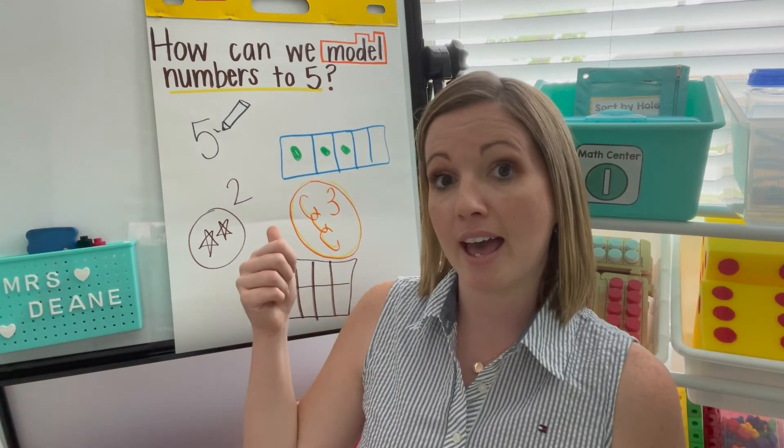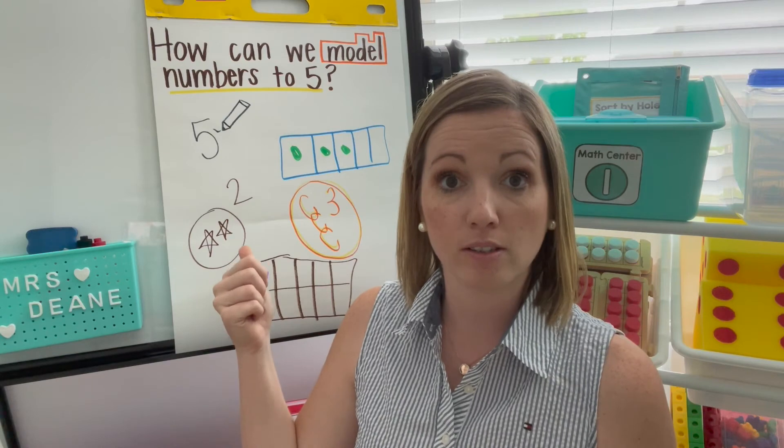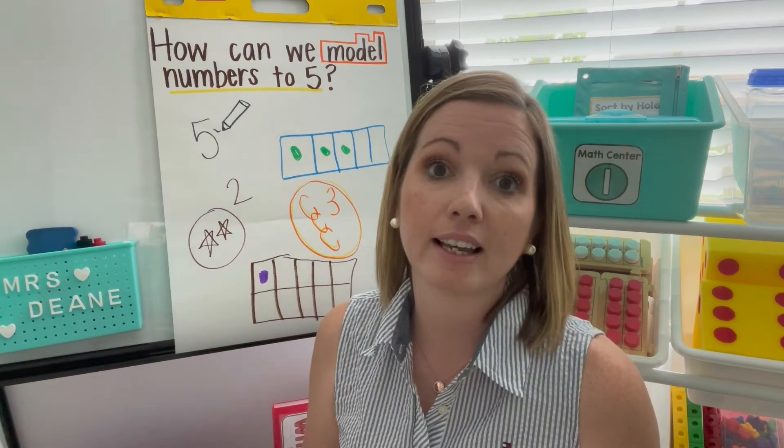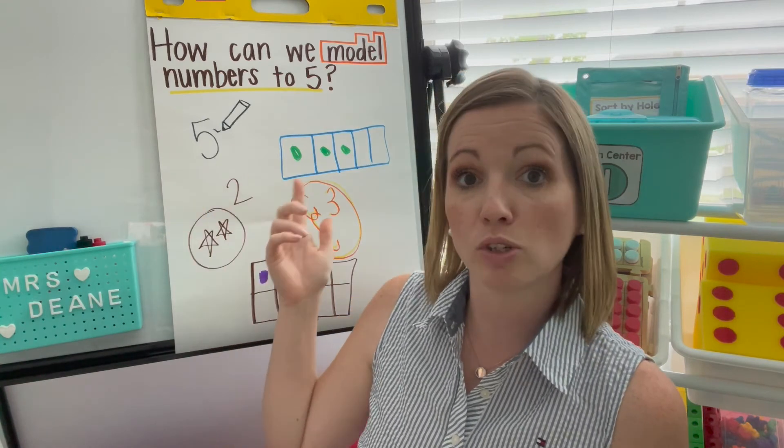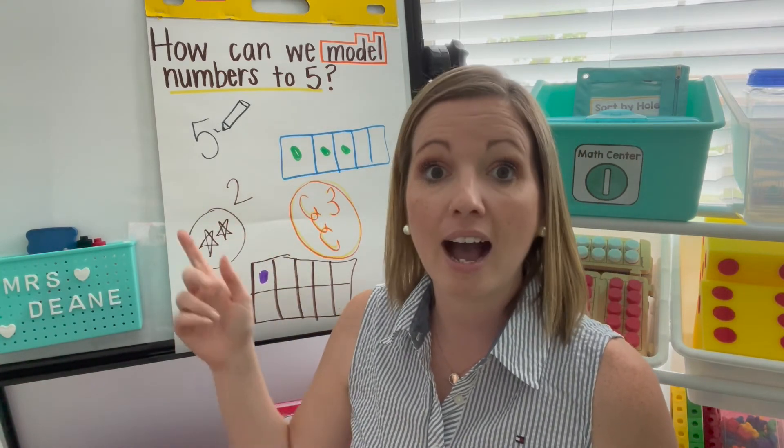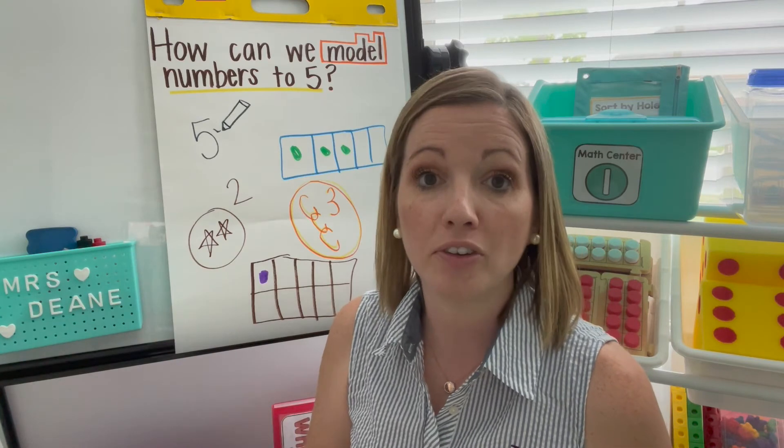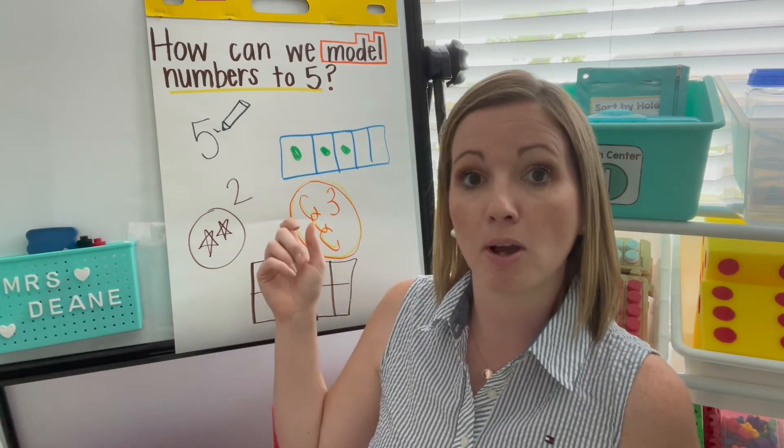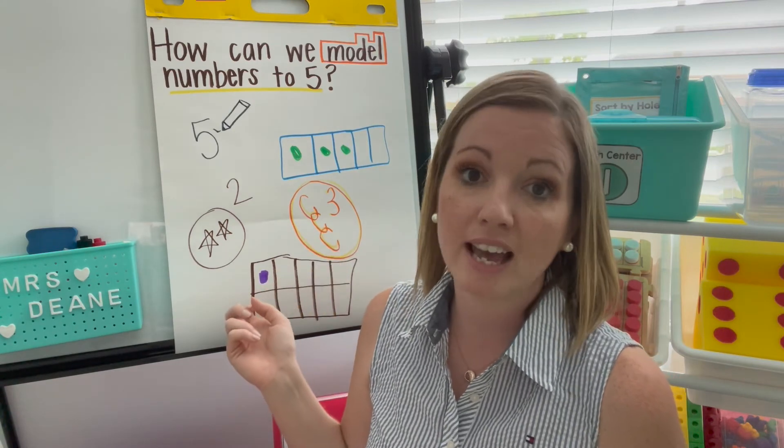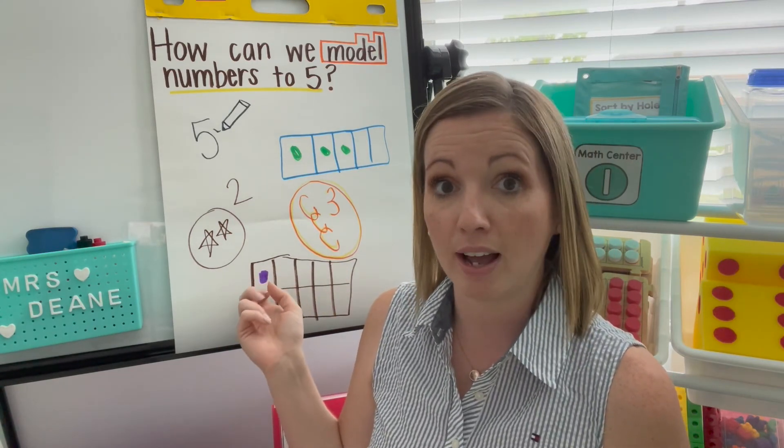I just went ahead and wrote in some possible responses to save time. They might say things like, I traced or I drew numbers to five. I used a five frame to help me model numbers to five. I use those star counters to build numbers to five. Or any other counters that you may have used during that. And keep going with,